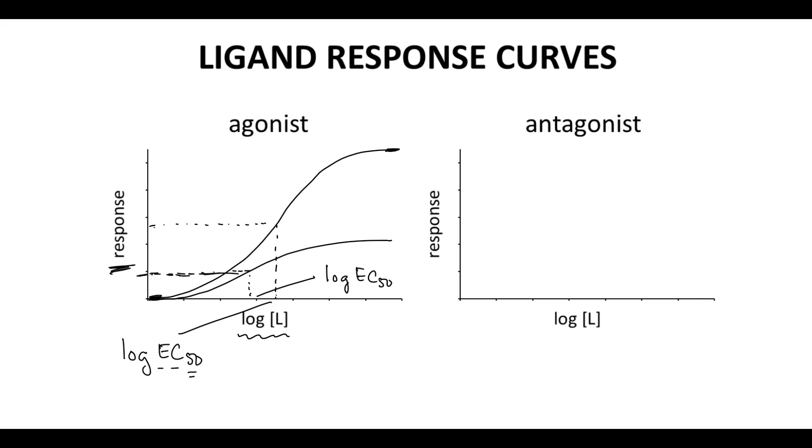For antagonists, we perform these experiments where the response starts at 100%. So we have the receptor mixed with a full agonist. As we add antagonist, the response drops again in this sigmoidal kind of shape, and what's happening is the antagonist is pushing the agonist off the receptor, and therefore the response is dropping. We again get an inflection point, and this x-axis value is called log IC50. The IC50 is an inhibitory concentration because the antagonist is inhibiting the agonist.